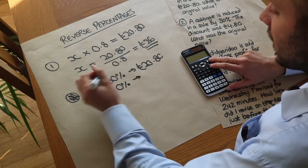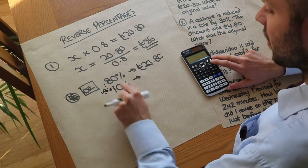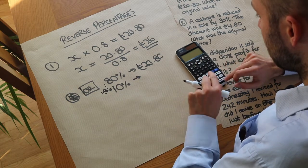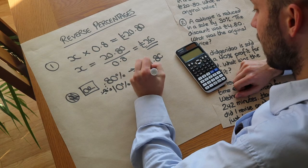With 80% was £20.80. We're dividing by 8 to get to 10% because it's 8 times smaller. £20.80 divided by 8 and that is £2.60.